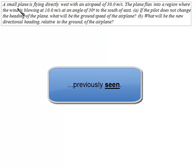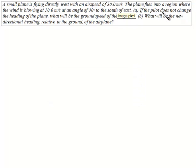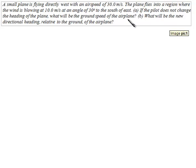A small plane is flying directly west with an airspeed of 30 meters per second. The plane flies into a region where the wind is blowing at 10 meters per second at an angle of 30 degrees to the south of east. A: if the pilot does not change the heading of the plane, what will be the ground speed of the airplane? B: what will be the new directional heading relative to the ground of the airplane?